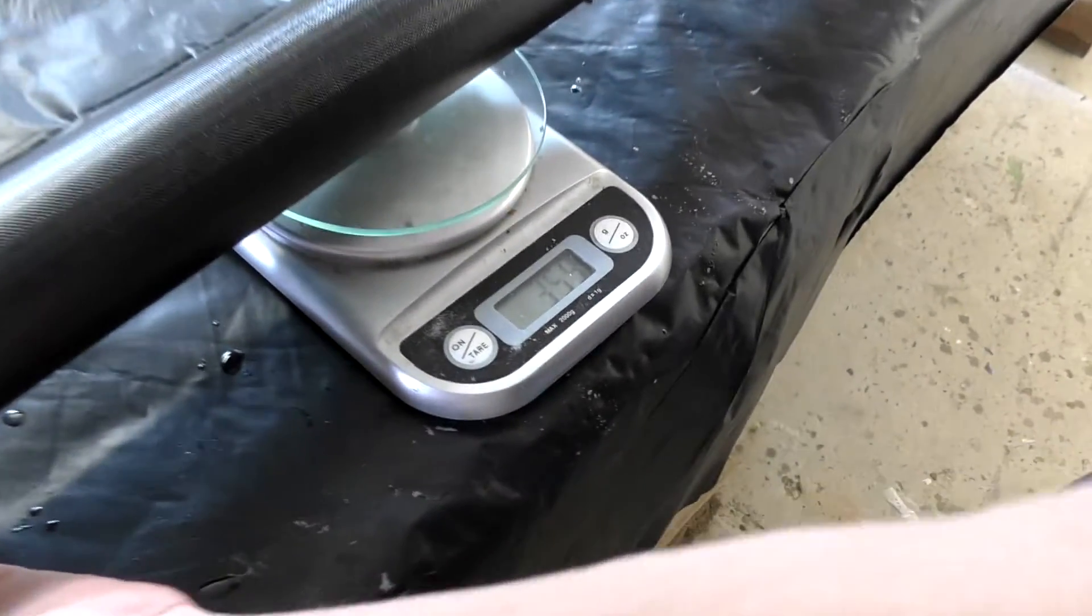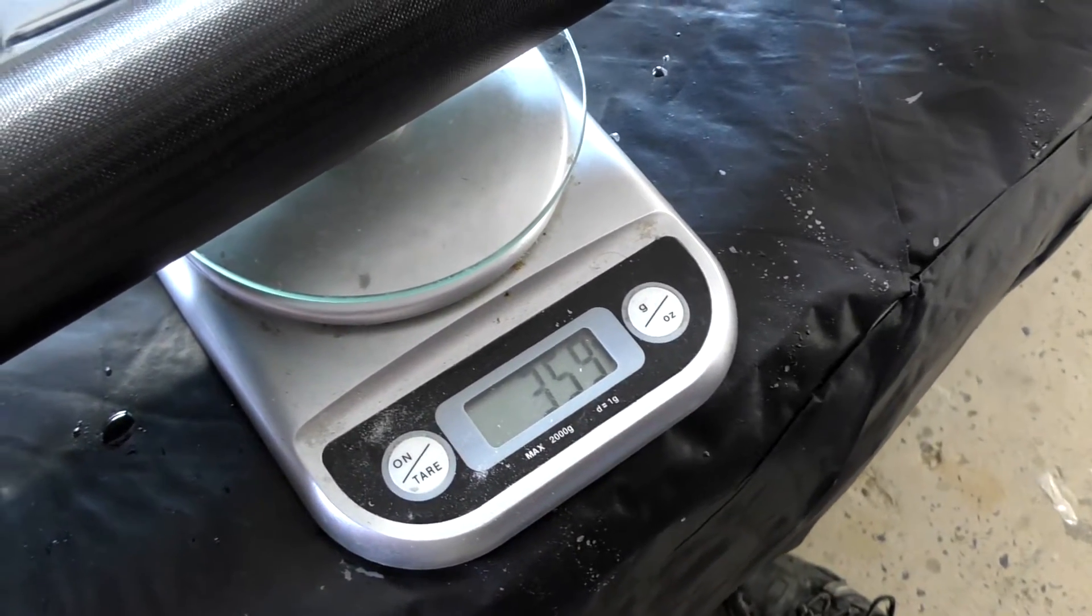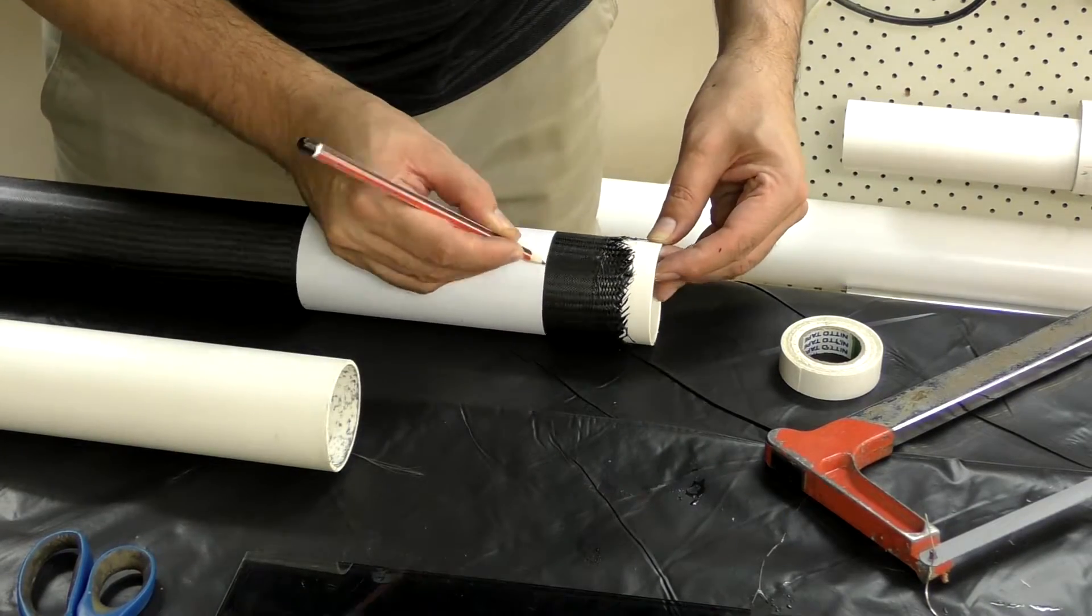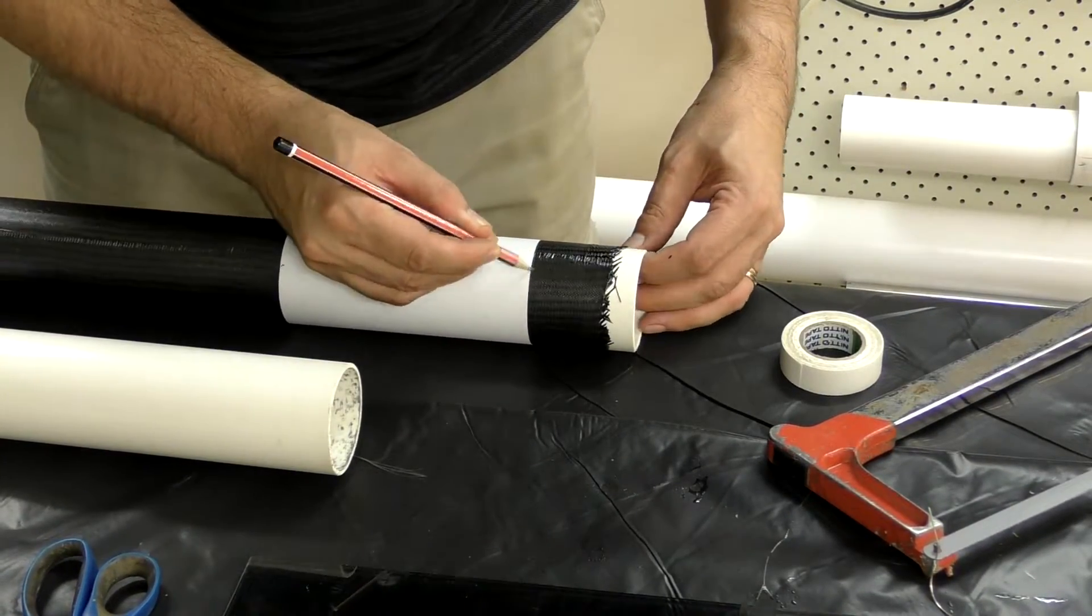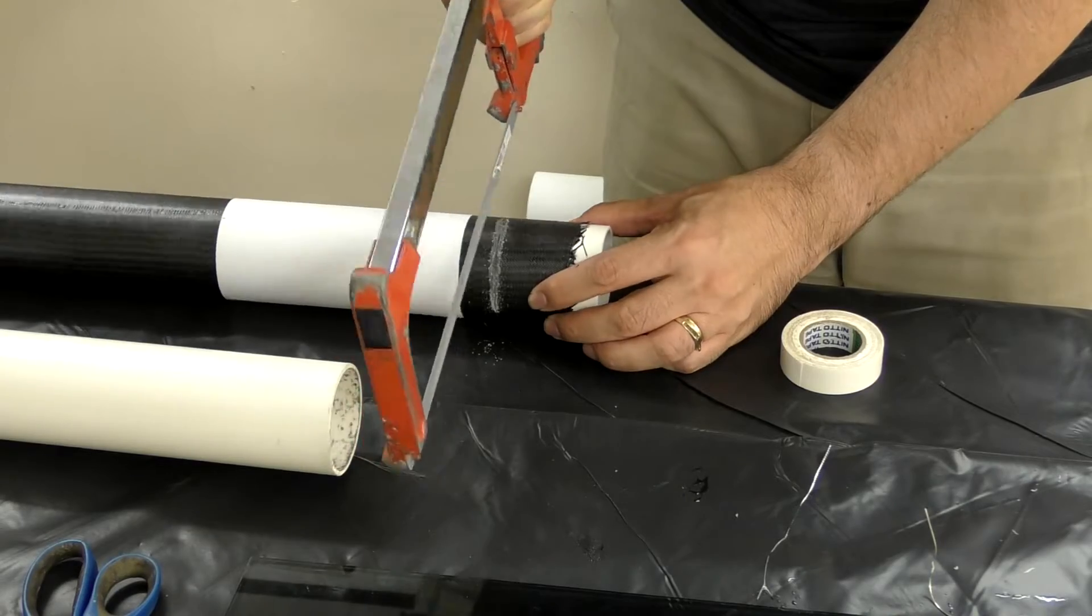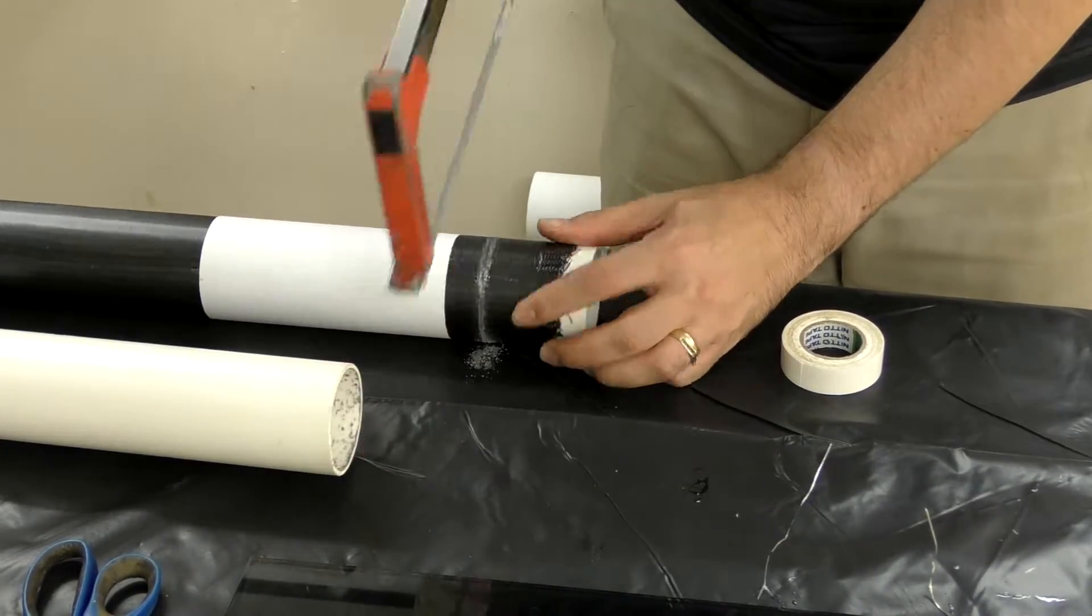This tube weighs only about 360 grams. Then it's time to trim the ends of the tube. Here we've just inserted a scrap piece of PVC pipe that supports the blade as you cut it.